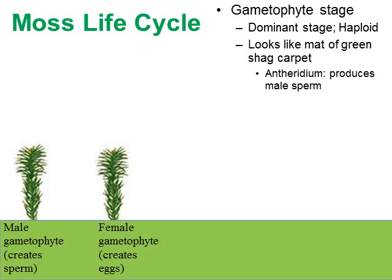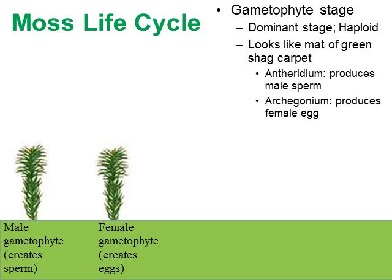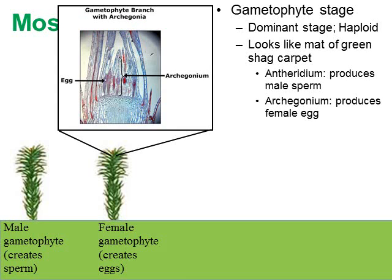What about the female gametophyte? You might have two moss plants growing side by side and with the naked eye you can't tell which is male and which is female. But if you zoom in to the tip of the female gametophyte with a high-powered microscope, you can see a little housing structure called the archegonium. Inside every archegonium, an egg is created that will eventually fuse with the sperm cell to form a zygote.